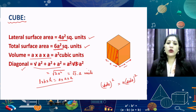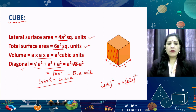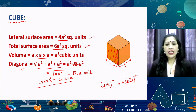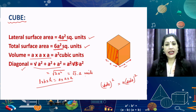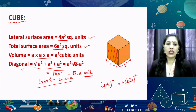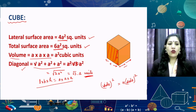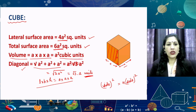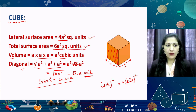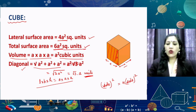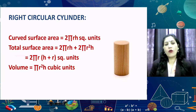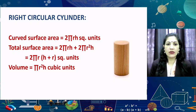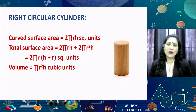Dear viewers, when we present the diagonal, that is the side, it will be represented in units only. If we present the volume, that will be in cubic units, and our surface area will be presented in square units. You can present the surface area in the form of square meters or square centimeters as per the dimensions given to us.